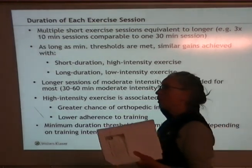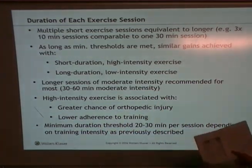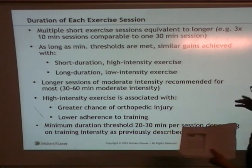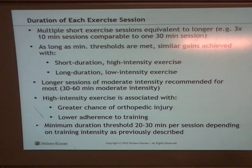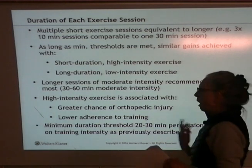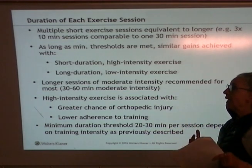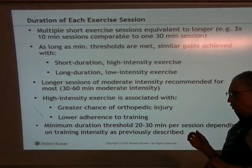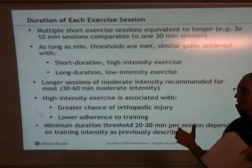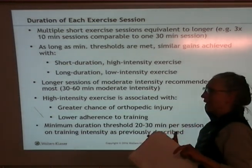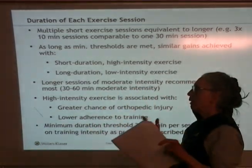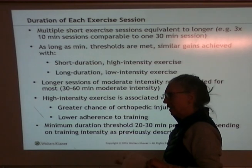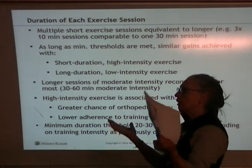Generally, for most people, somewhere between 30 to 60 minutes is going to be the recommendation — 60 minutes would be the maximum you'd set for an aerobic session, and for most people you're going to want something in the moderate range. High intensity exercise has benefits for aerobic capacity, for pushing your VO2 max and lactate threshold, but it's also associated with a much bigger risk of getting hurt and burnout and dropout because it's just too hard.